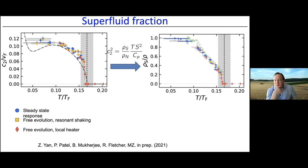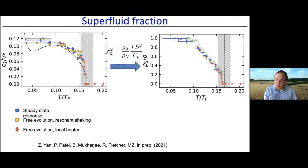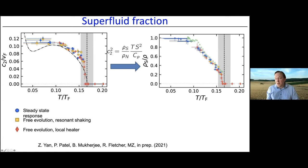From the second sound speed, together with the equation of state (specific heat at constant pressure, entropy, measured about ten years ago), one can extract the superfluid fraction. The green dots are from Rudi Grimm's one-dimensional measurement, which Sandro Stringari and Lev Pitaevskii used to extract the three-dimensional superfluid density, showing a result that rises from zero at T_c.